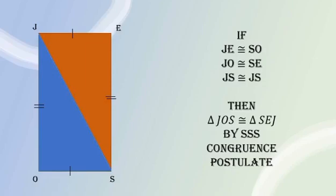In our last example, there are two triangles connected. As you can see, they form a rectangle. One congruent side is the diagonal of the rectangle. What are the two congruent sides? JE is congruent to SO, JO is congruent to SE, and the congruent sides that are the same: JS is congruent to SJ. Then, triangle JOS is congruent to triangle SEJ by SSS congruence postulate.